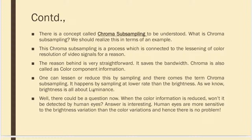We carry out the sampling at a lower rate than the brightness, meaning we affect the color parameter rather than the brightness. When color information is reduced, it won't be detected as much as the eyes detect brightness. Chroma subsampling saves bandwidth by reducing the resolution of the video signals for color, not for brightness — and this is fine because our eyes won't detect changes in color as readily as changes in brightness.